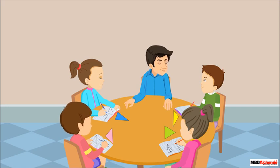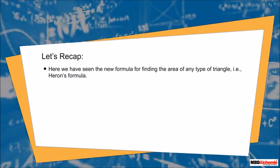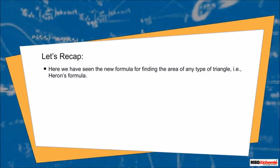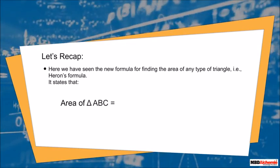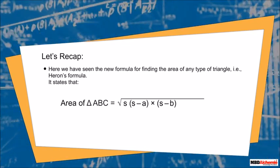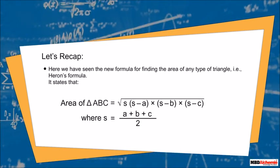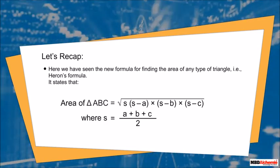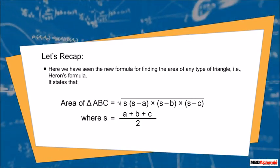Sid, Rhea, and Sophie thank Neil's father for sharing Heron's formula. In recap: we have learned a new formula for finding the area of any type of triangle — Heron's formula. It states that the area of a triangle equals the square root of s × (s − a) × (s − b) × (s − c), where a, b, and c are the sides of the triangle and s is the semi-perimeter, that is, half of the perimeter of the triangle.